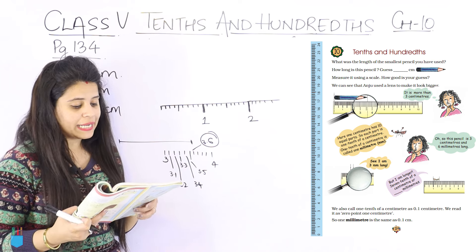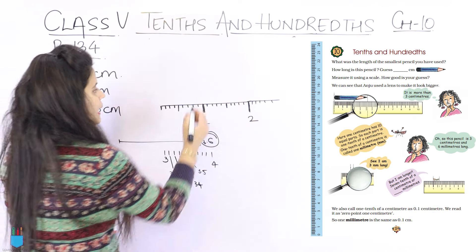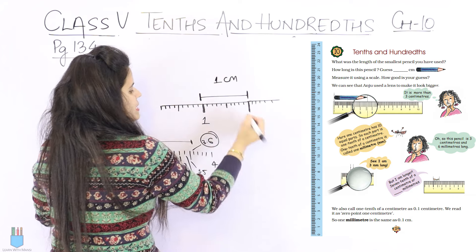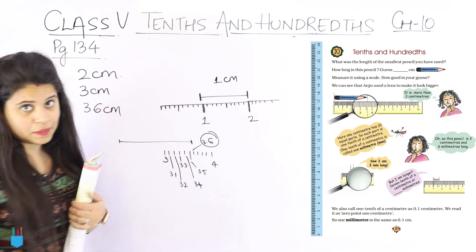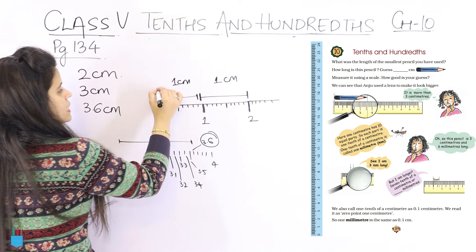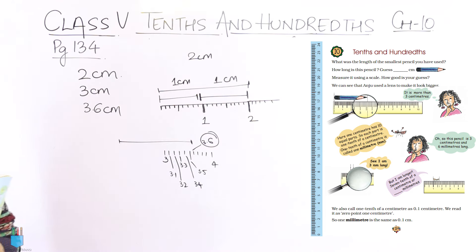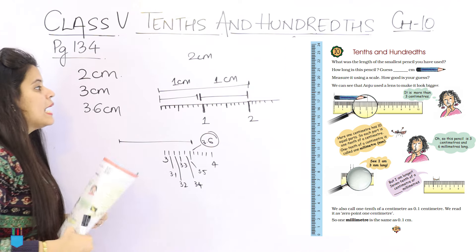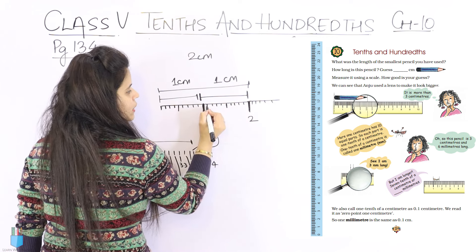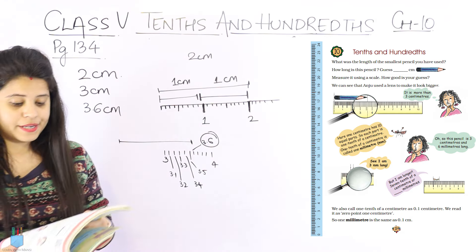Now, you can see here in the bubble: 1 cm has 10 equal parts. Each part is 1/10 of a centimeter. This means the gap between two small marks is 1/10 of a centimeter. So every centimeter is divided into 10 equal parts: 1, 2, 3, 4, 5, 6, 7, 8, 9, 10.